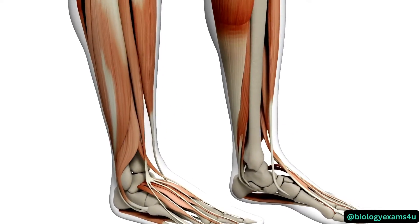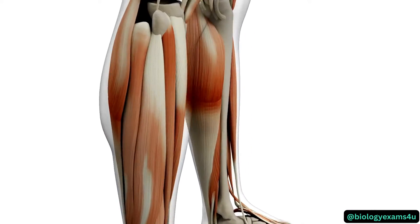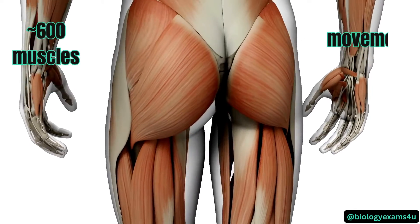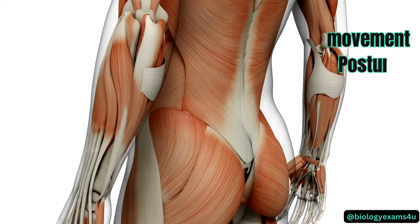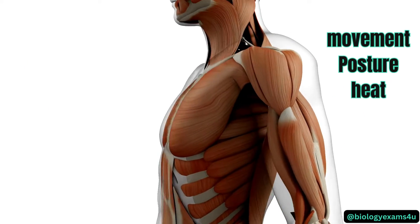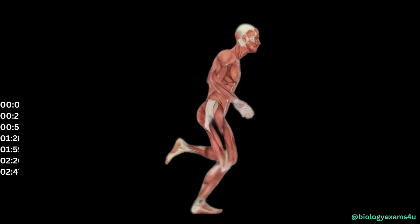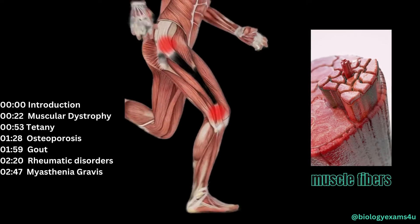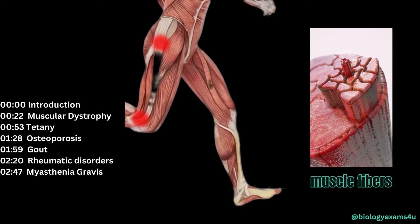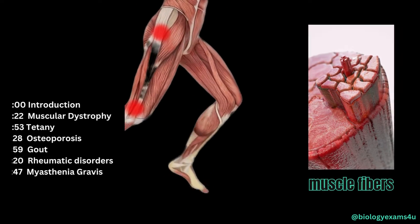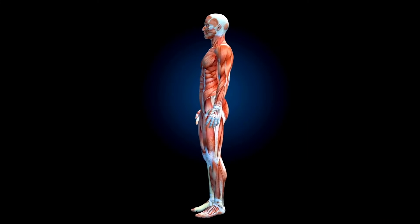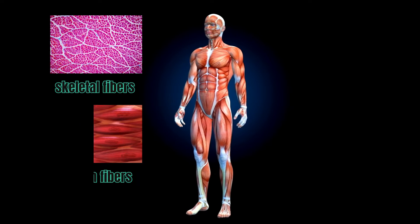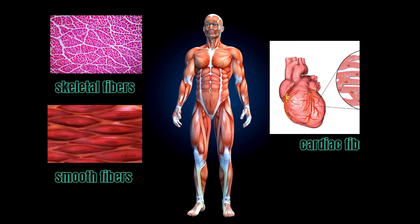The human muscular system is a complex network of over 600 muscles that work together to facilitate movement, maintain posture, and generate heat. These muscles are made up of individual muscle fibers that contract and relax in response to signals from the nervous system. There are three types of muscles in the human body: skeletal, smooth, and cardiac.